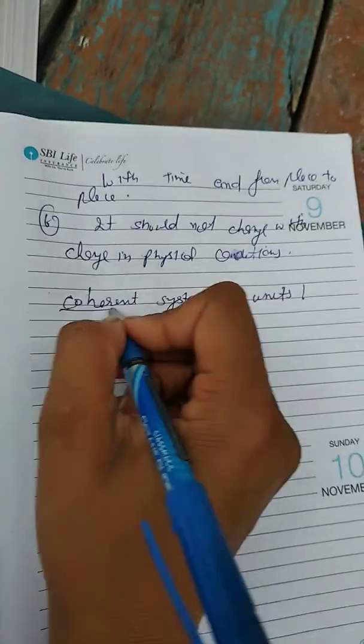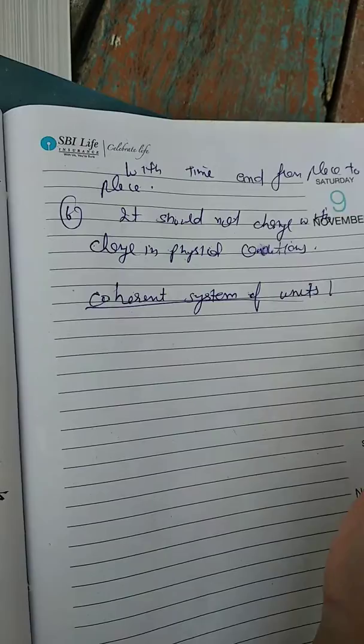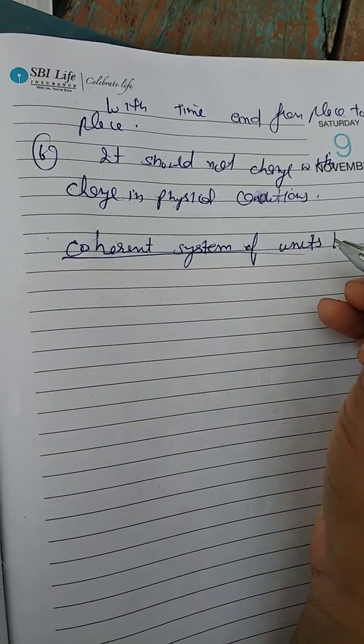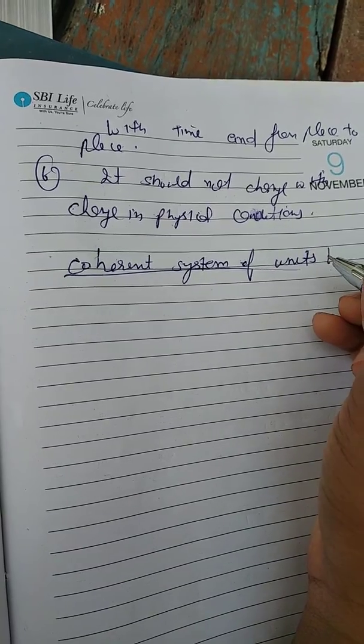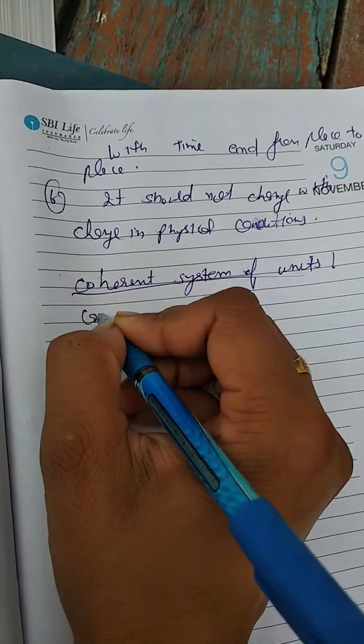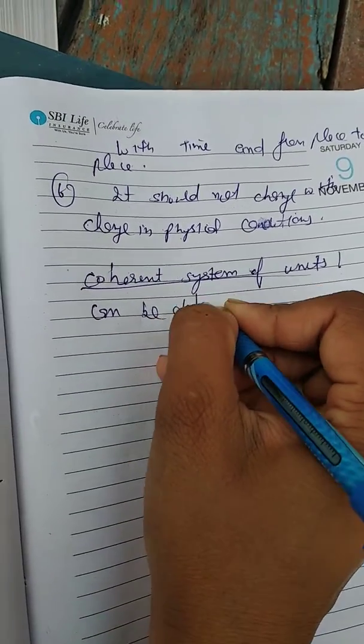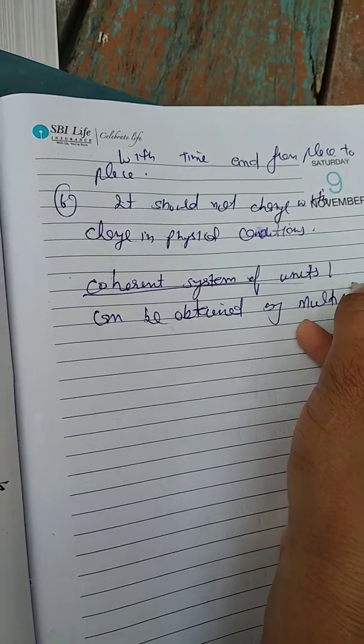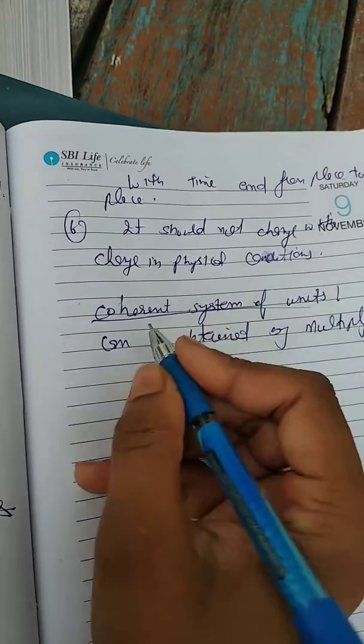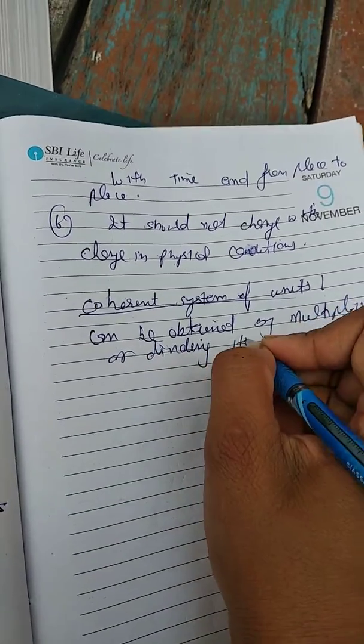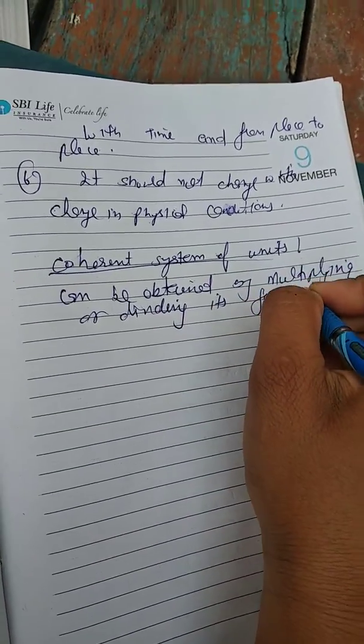Coherent system of unit - the system of units is said to be coherent if all the derived units can be obtained by multiplying or dividing its fundamental units.